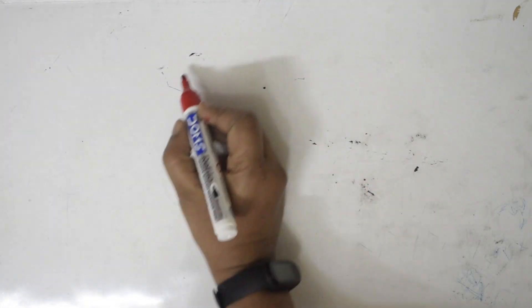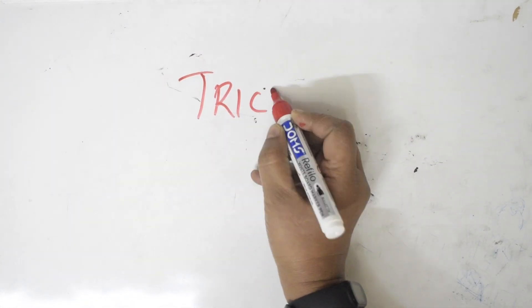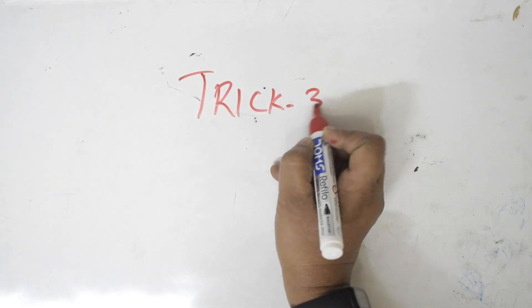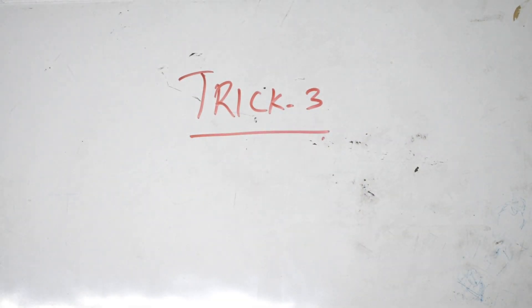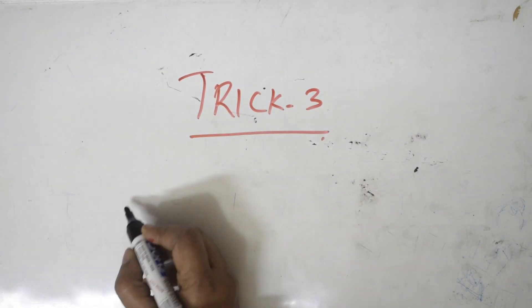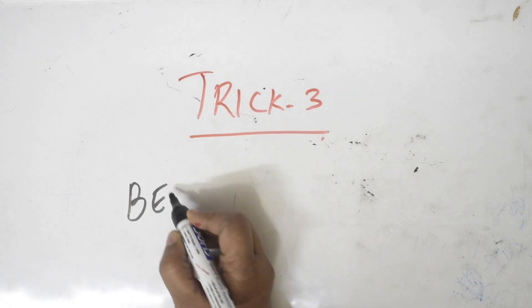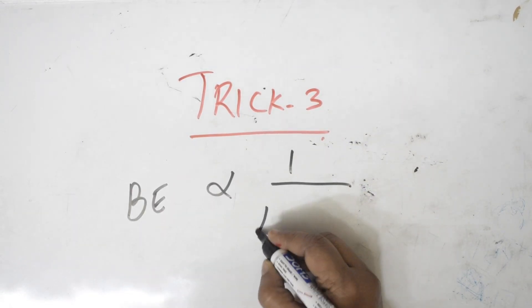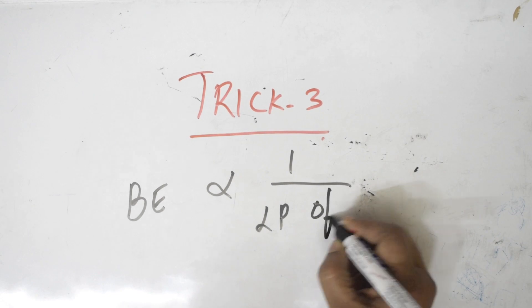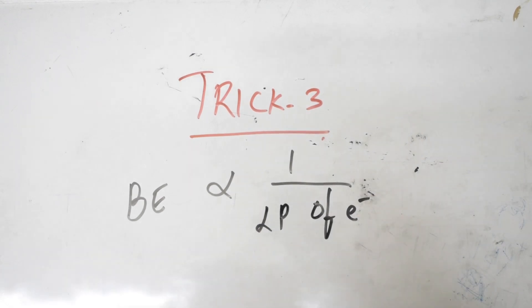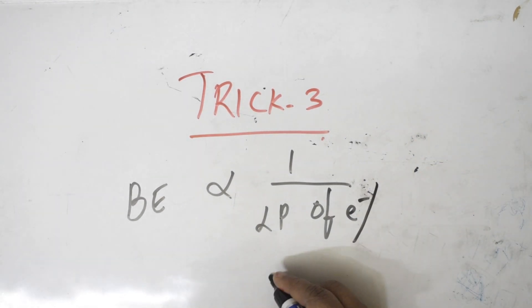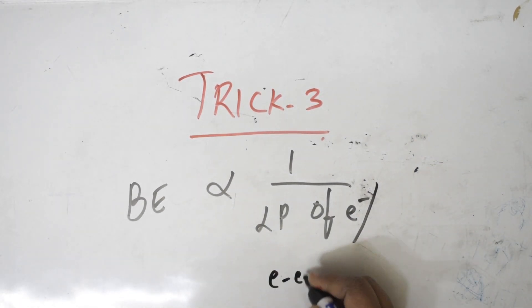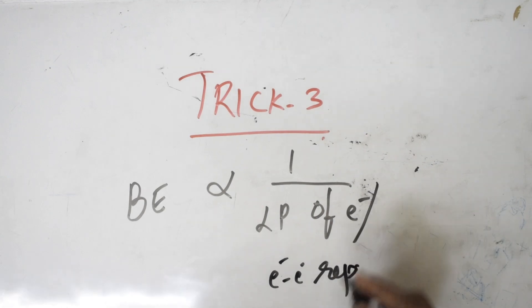Trick number three: bond energy is inversely related to the number of lone pairs of electrons, or electron-electron repulsions. More lone pairs means lower bond energy.